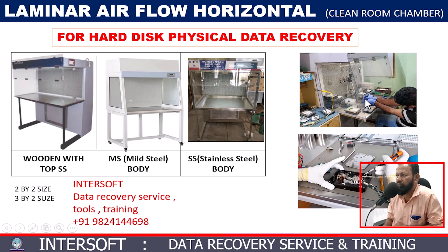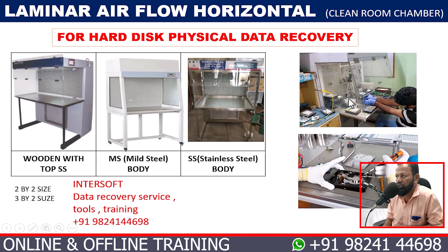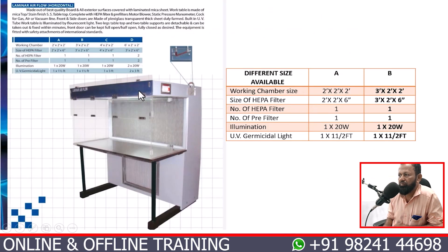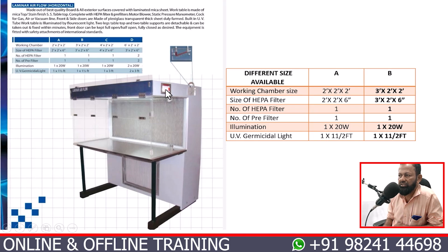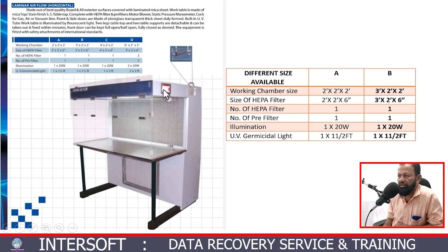This is our lab clean room where students are doing practice. We are selling this clean room. The clean room specifications include chamber sizes of 2 by 2 and 3 by 2, a HEPA filter, pre-filter, and all associated components. This wooden unit has three switches: one for UV light, one for lamp, and one for motor, plus indicators.